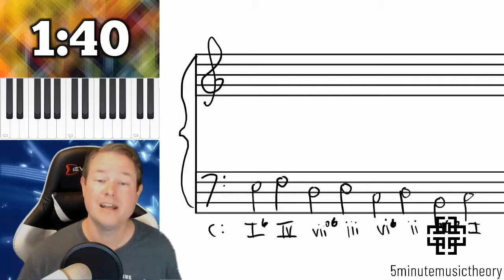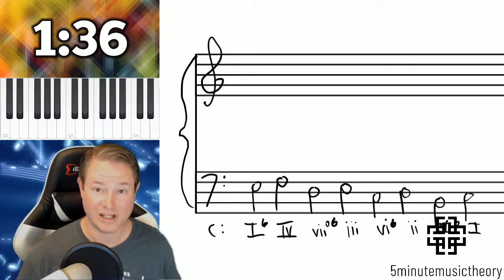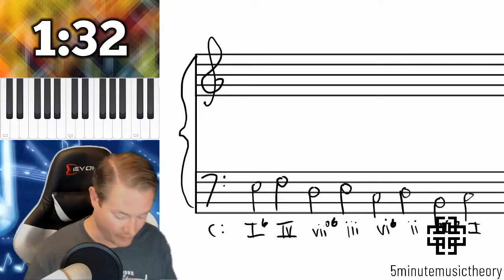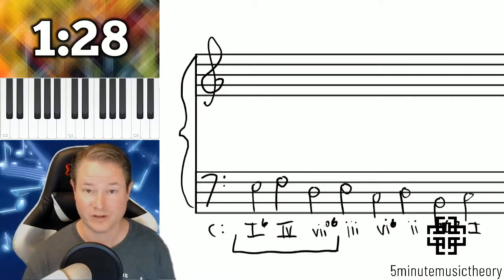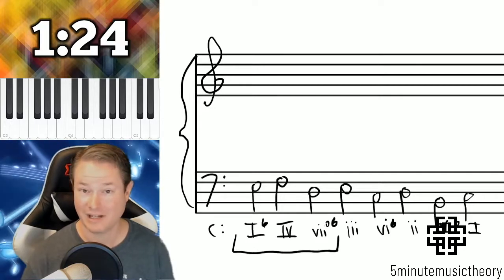So just to quickly summarize, the circle of fifth sequence is just simply a sequence that goes through the descending circle of fifths. And it doesn't even need to be all of them. It would still be considered a circle of fifth sequence if we just had those first three. Because remember, you have to have three in order to be considered a sequence.